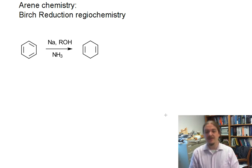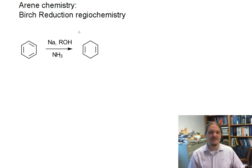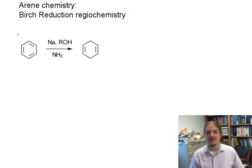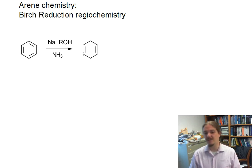Hello. In this video, I'm going to talk a little bit more about the Birch reduction, focusing on regiochemistry. In my last video, I shared that the Birch reduction was a reduction of the benzene or the aromatic ring directly, and that it was a dissolving metal reduction, and that the product was a non-conjugated 1,4-cyclohexadiene.